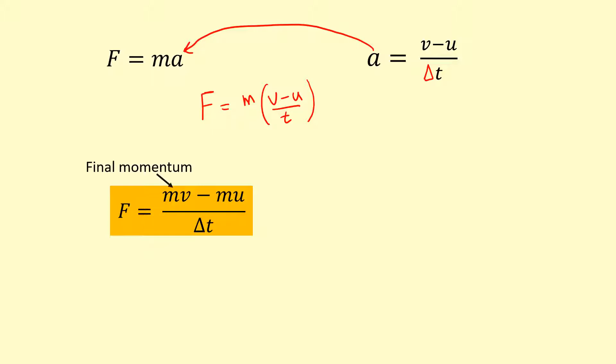But what does mv stand for? Well, that's the final momentum. mu, that's the initial momentum. So this equation is really saying that the force, or the resultant force, is equal to the change in momentum over the time taken.